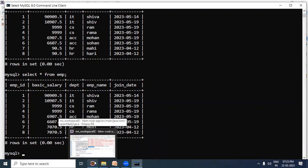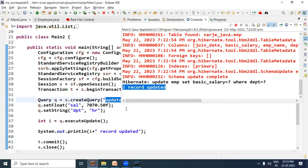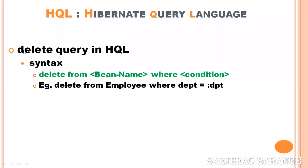In the next step we will discuss the delete query. To write a delete query in HQL, the syntax is again similar to SQL: 'delete from' then the bean name, followed by a where condition if needed. For example: 'delete from Employee where dpt = :dpt' — where Employee is the bean name and dpt is the bean property. The value for dpt will be provided via a setter method.